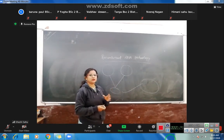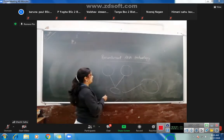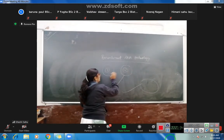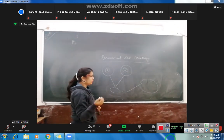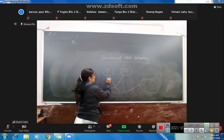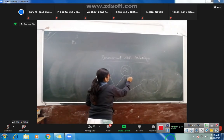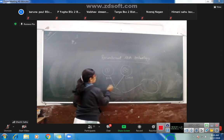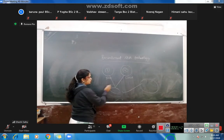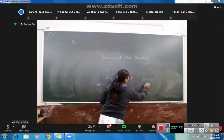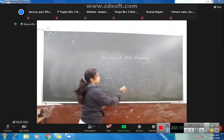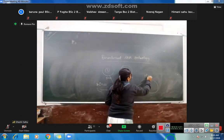Recombinant DNA Technology means that where we have two different species of DNA from different organisms, we take the genetic material of both of them and combine them. The resulting DNA is called recombinant DNA. We then transfer this recombinant DNA to another organism, which is our host organism.